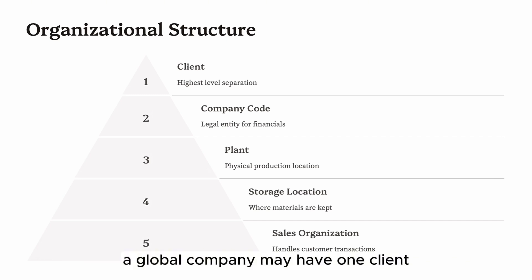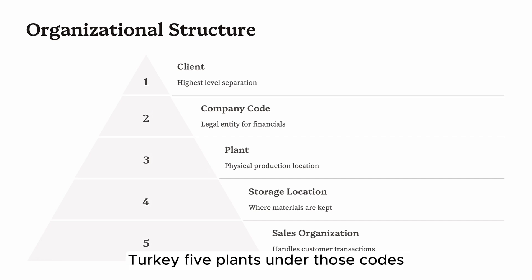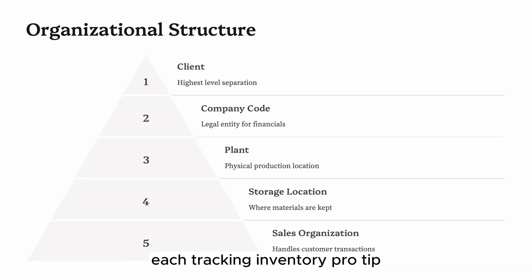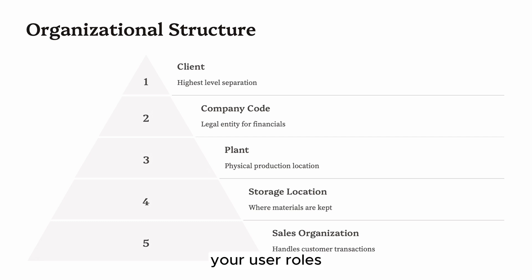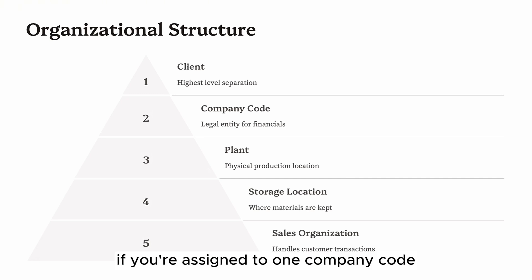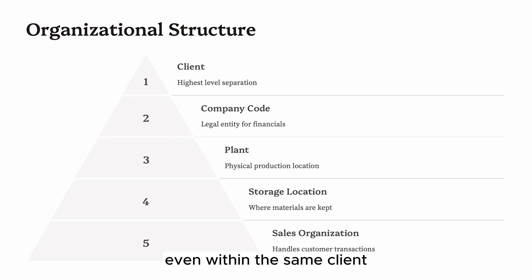Example: a global company may have one client, three company codes (USA, Germany, Turkey), five plants under those codes, and dozens of storage locations each tracking inventory. Pro tip: your user roles and data access in SAP are often linked to these structures. If you're assigned to one company code, you may not be able to access another — even within the same client.